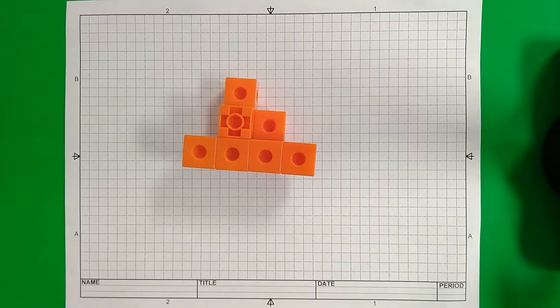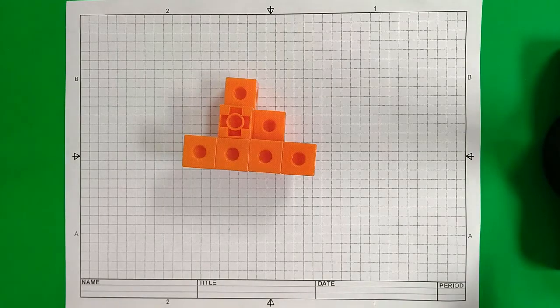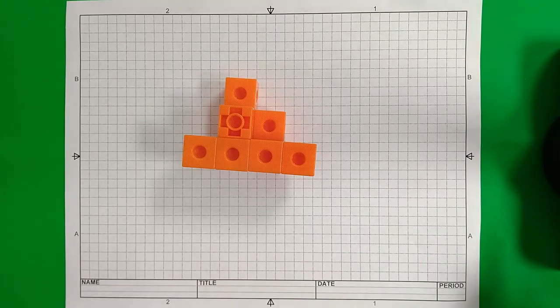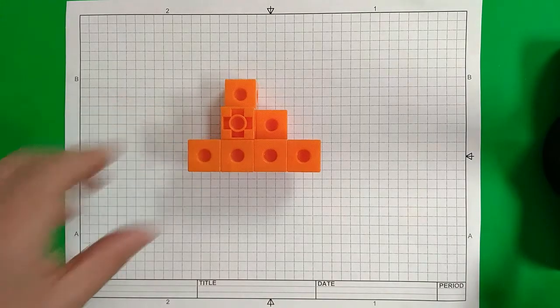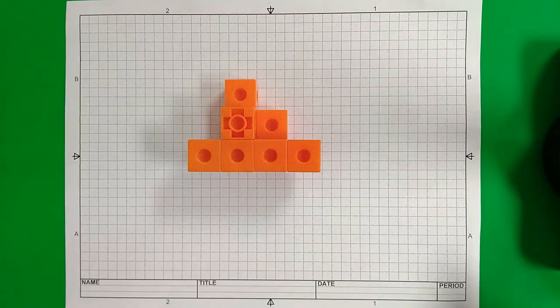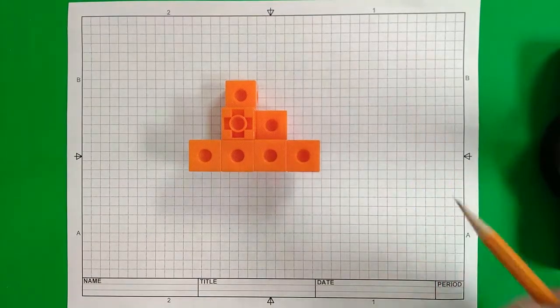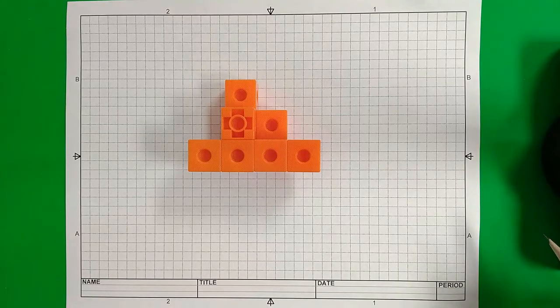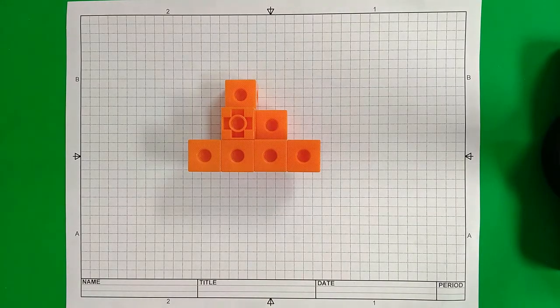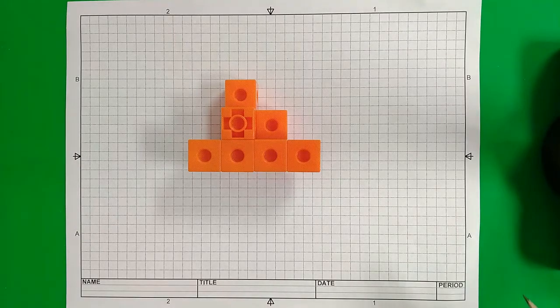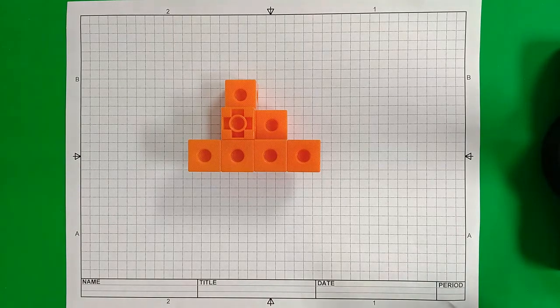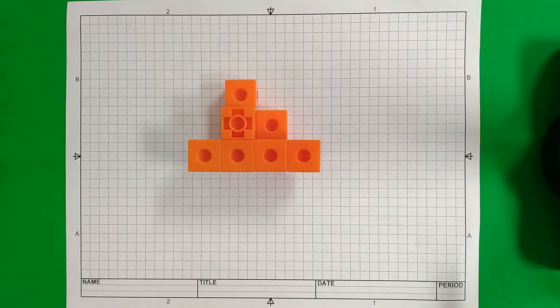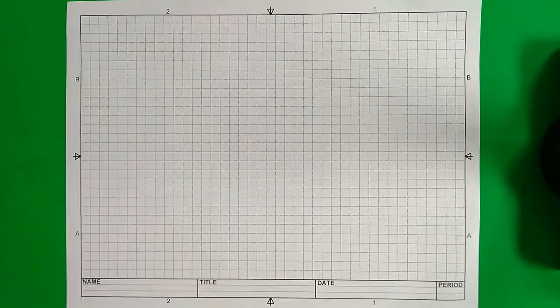For this video, we are going to take a look at multi-view sketching. We would also call this orthographic sketching. And for multi-view sketching, the goal is to take an object such as this and try to draw it from three different sides. We're going to draw a 2D representation instead of a 3D view like you would see in an isometric sketch. We've seen this object before in one of our videos about isometric, but let's talk a little bit about the grid paper.